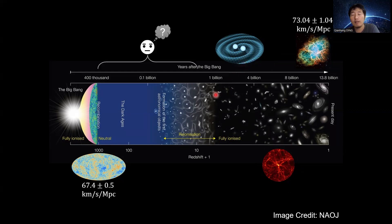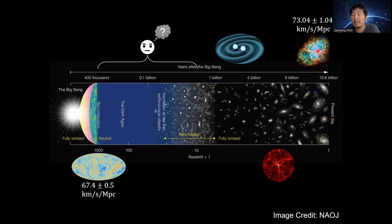What about even higher redshift, such as in the Dark Ages? Currently we don't have a method. However, such a measurement is meaningful. If such a result agrees with the early universe measurement, that may indicate there is some systematic uncertainty or new physics in the later universe. Or if it agrees with the later universe measurement, that may mean there is some systematic uncertainty or new physics in the early universe.